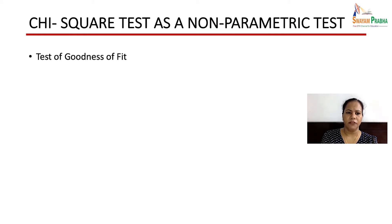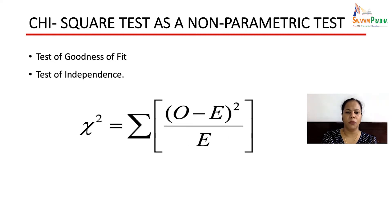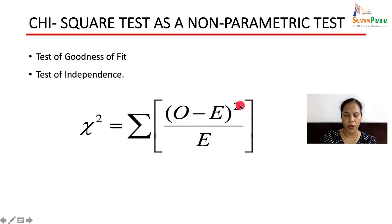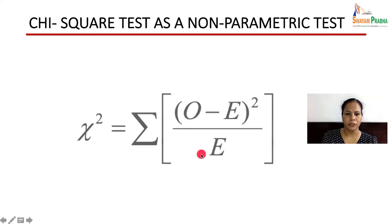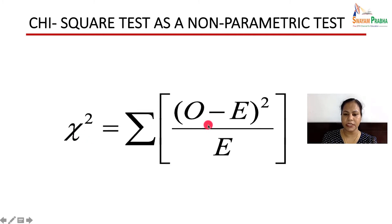The chi-square test is used for two purposes: test of goodness of fit and test of independence, and both use the same formula. Chi-square equals the summation of observed minus expected frequency, squared, divided by the expected frequency. Here, O is the observed frequency and E is the expected frequency. When discussing both tests, I will explain how to calculate the expected frequency.